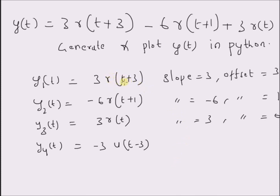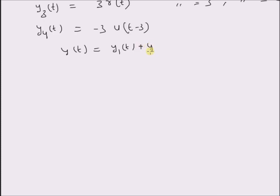The last component of the total signal y(t) is y4(t), equal to minus three times the unit step signal, which starts at positive three. We basically have to construct these four components and then add them to produce the total signal — that is, y(t) = y1(t) + y2(t) + y3(t) + y4(t). We have to generate each of those components and finally combine them.